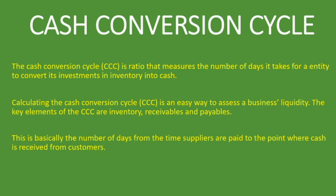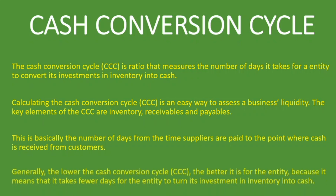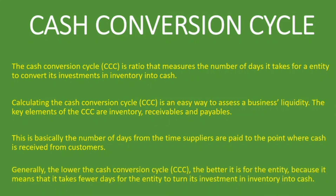From the point where we pay our suppliers to the point where we collect money from clients we sold to on credit — that is the cash conversion cycle. Generally, the lower the cash conversion cycle the better, because it means fewer days for the entity to turn its investment in inventory into cash. Like any other ratio, it may not make much sense on its own.